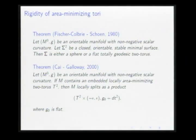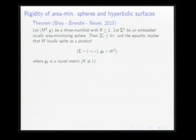We can think of this theorem as a local rigidity result for a model which is a cylinder over a flat torus. How about other cylinders? In the case of the sphere, Bray, Brendle, and Neves proved the following. Now we assume the scalar curvature is at least 2, and M contains an embedded locally area-minimizing sphere. Then the area of this sphere is at most 4π, and if equality holds, we have a splitting where the slice is a round sphere with constant curvature 1.